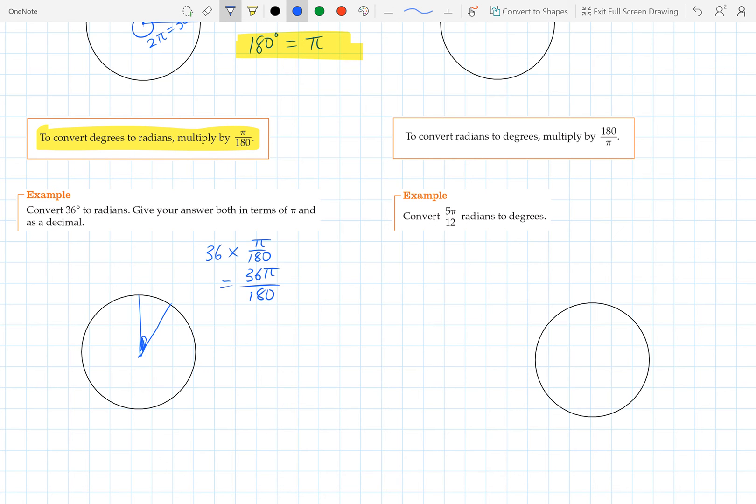And we would just simplify that fraction. So that could be written as 18 pi over 90, or 9 pi over 45, or pi over 5. We don't have to write the 1 there, so we can just write pi over 5. So that angle there we can also call pi over 5, as well as 36 degrees.